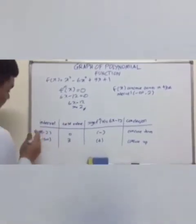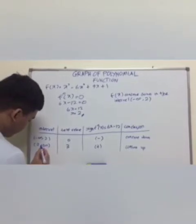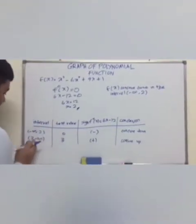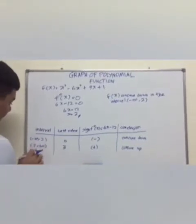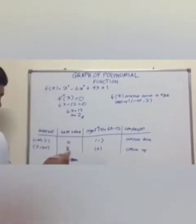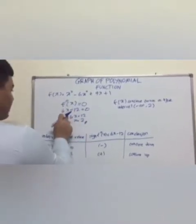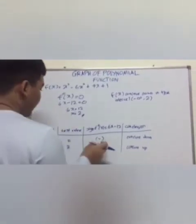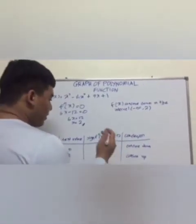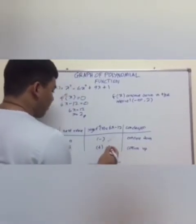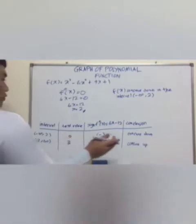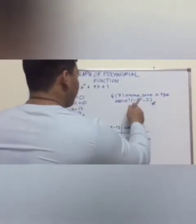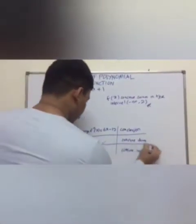So for interval, we must begin with negative infinity to 2, 2 until infinity. So for test value, you can use anything between negative infinity until 2, and you can use test value for 2 until infinity, anything. So I use 0 and 3. So with test 0 to this equation, you will get negative. And 3 for this, you will get positive. So negative, positive, how do you know if it's concave down or concave up? So if it's negative, so this is concave down. So if it's positive, it's concave up. So from this table, we can know that F(x) concave down in the interval negative infinity until 2.